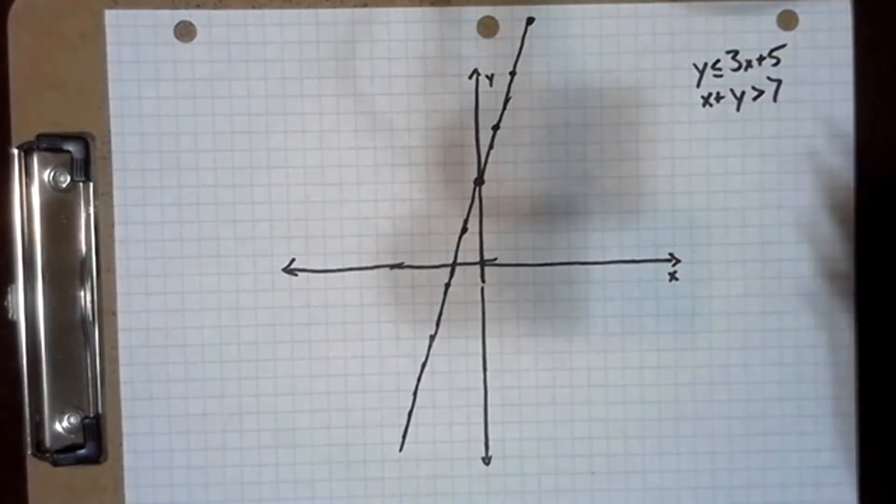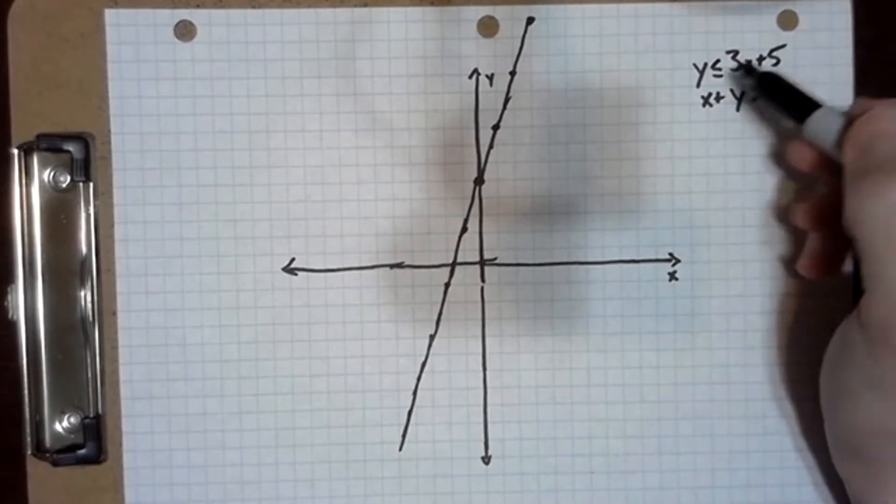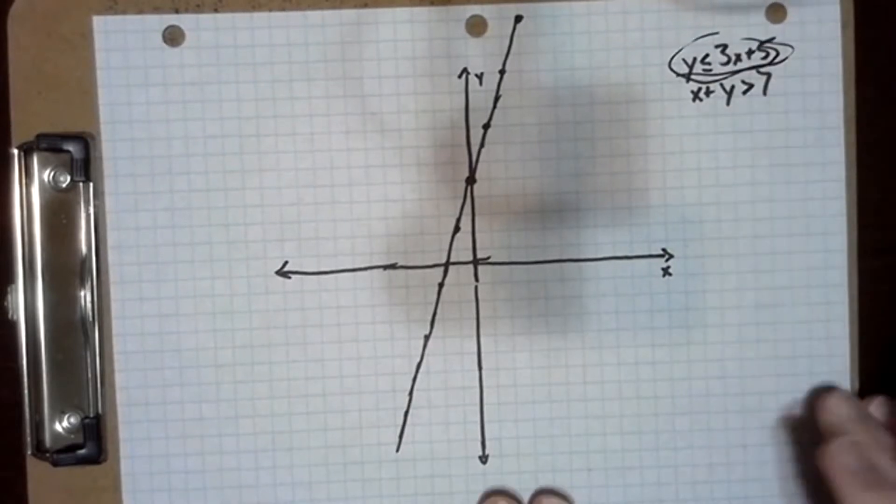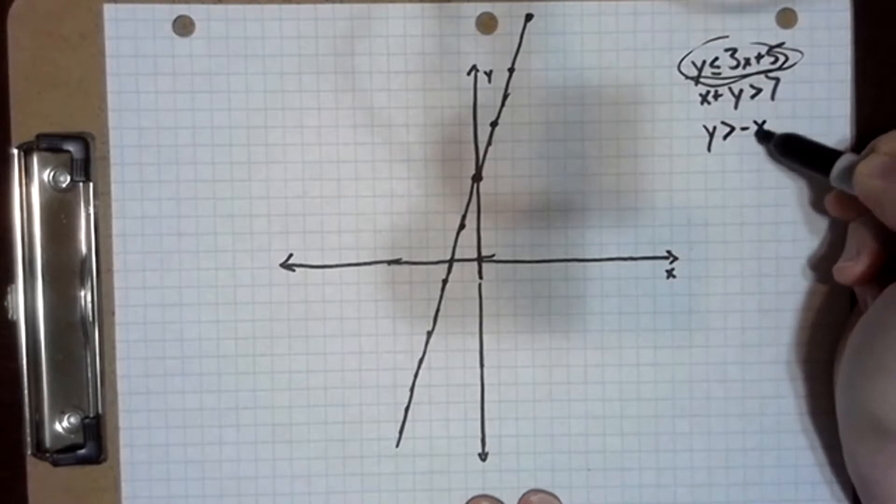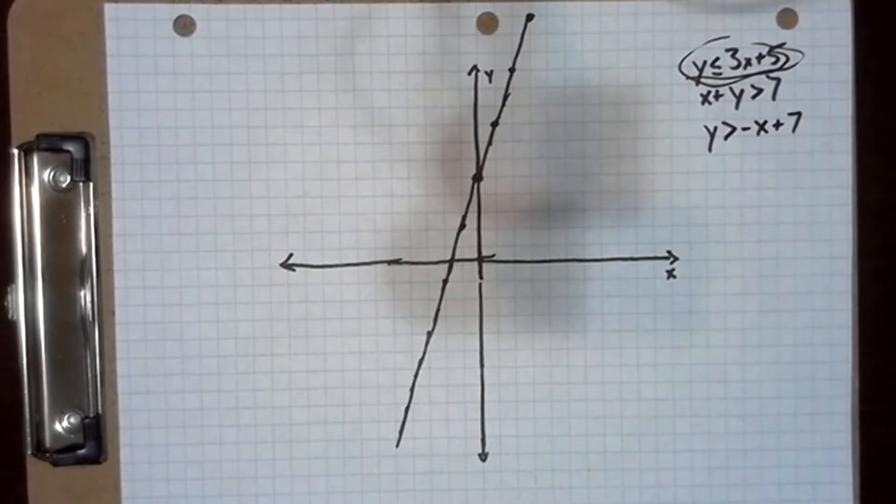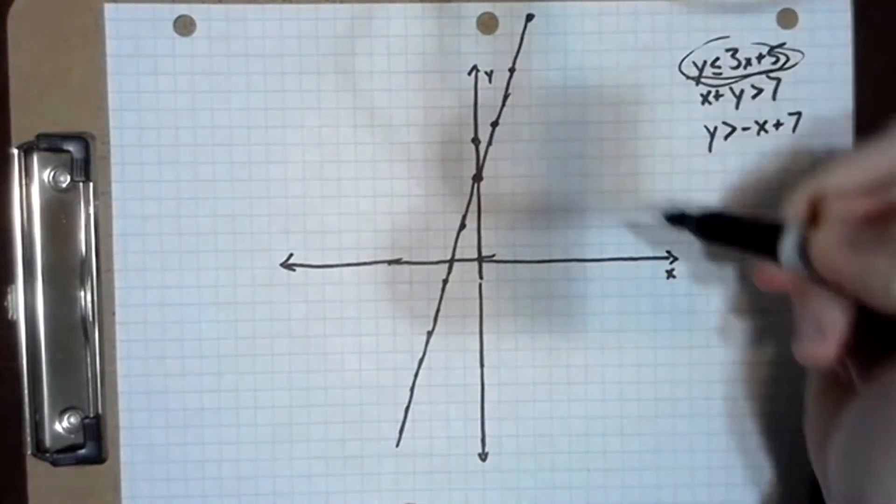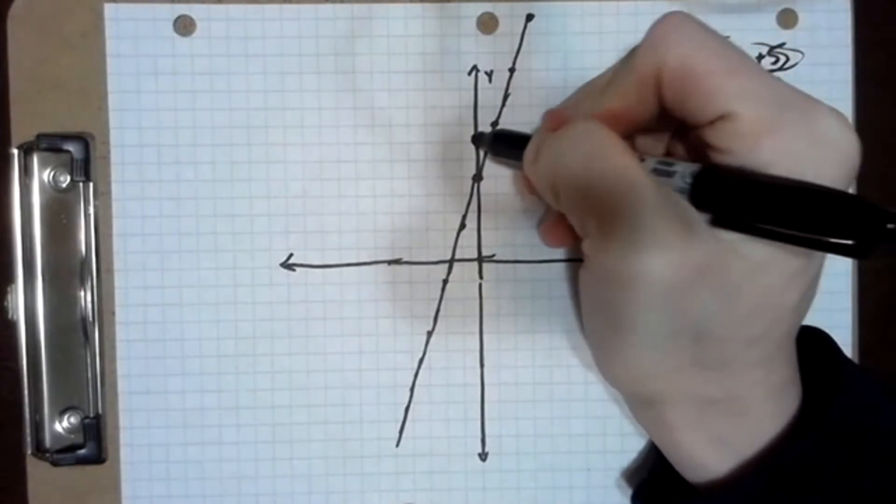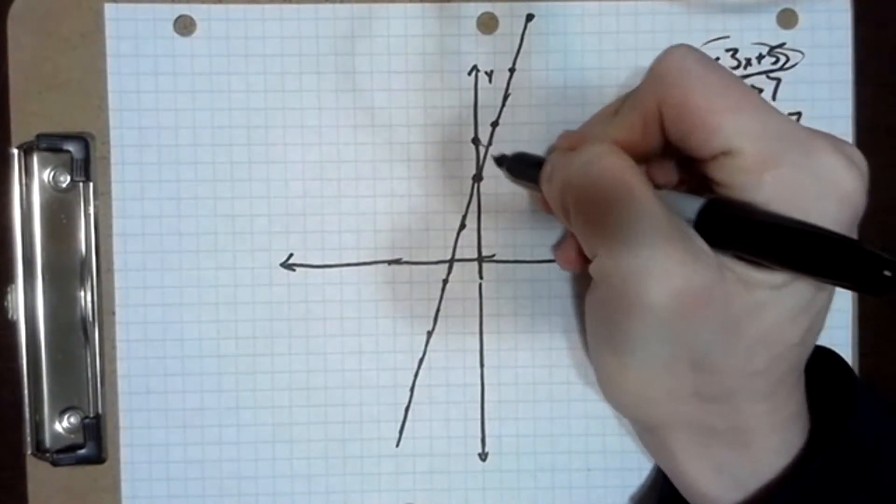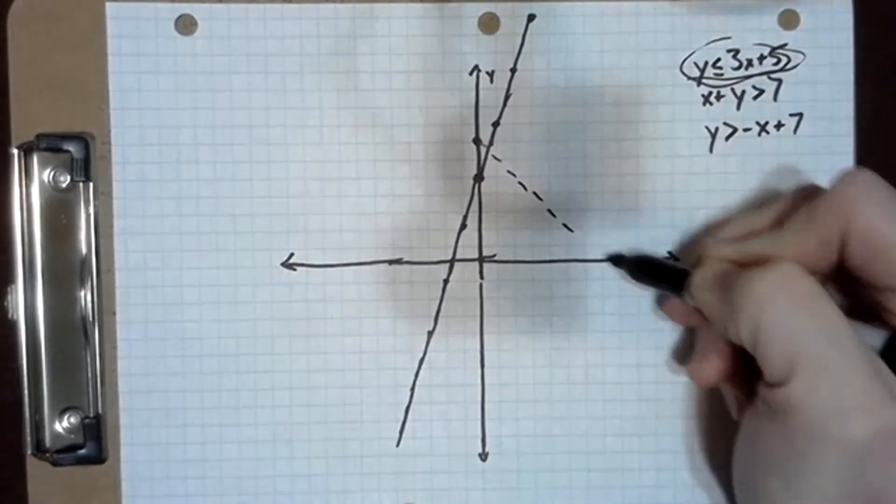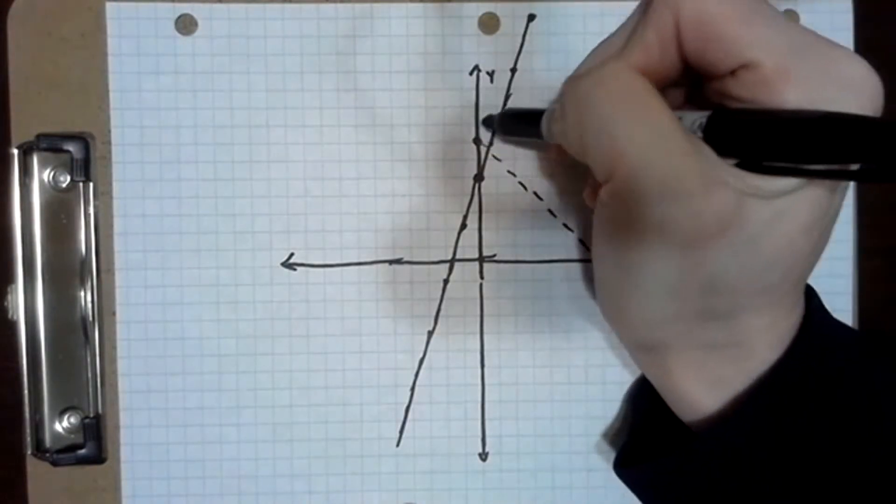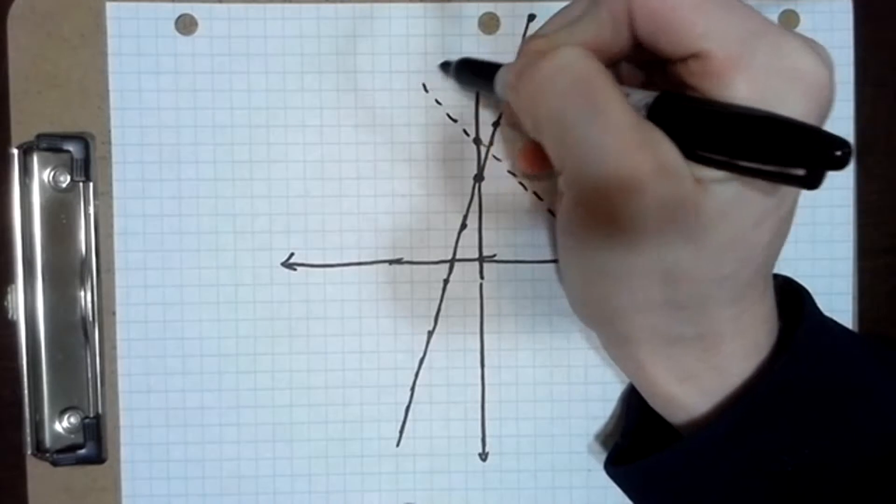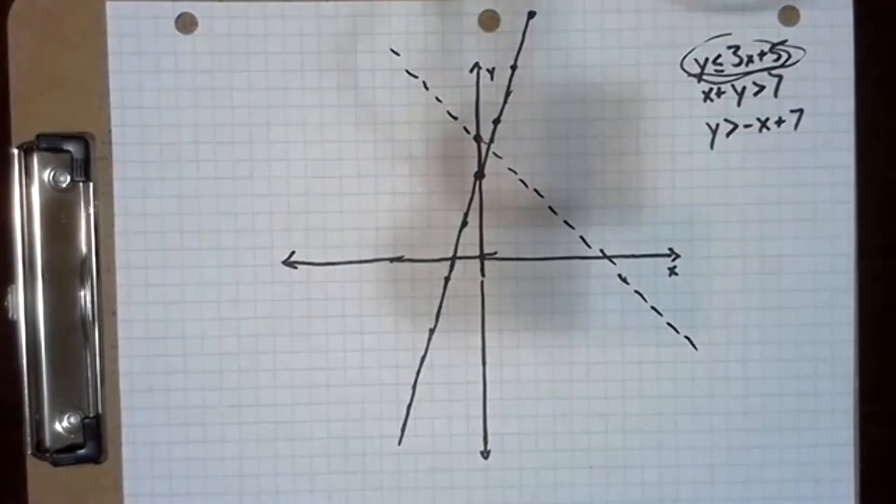And the other thing we've got is x plus y is greater than 7. Note that in this equation we have a less than or equal, so we use a nice solid line like that. Here we have x plus y is greater than 7. I'm going to rewrite that as y is greater than negative x plus 7. So it's going to have an x-intercept right here and then at the point 0, 7, and then it's going to be a dashed line coming down this way. And it's dashed because the line itself is not part of the solution set.